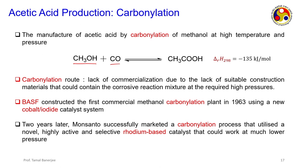Researchers proposed carbonylation instead of oxidation: using methanol with CO to form acetic acid directly. The carbonylation route was known for a long time but lacked commercialization because there was no suitable construction material to contain the corrosive reaction mixture at high pressures. BASF constructed the first commercial methanol carbonylation plant in 1963 using a cobalt and iodide catalyst combination. Two years later, Monsanto improved upon that by successfully commercializing a carbonylation process using a highly active and selective rhodium-based catalyst operating at much lower pressure.